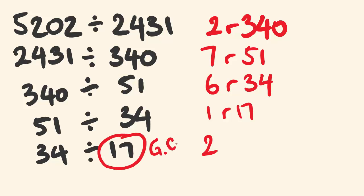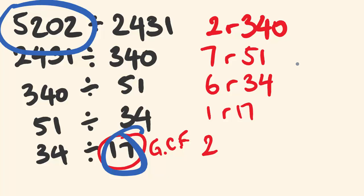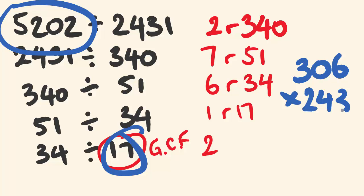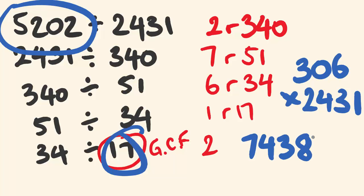Our GCF is 17. So 5202 divided by 17 gives 306, then multiply by 2431. The least common multiple is 743,886. Yes, I did prepare that one earlier — but I wanted to show you how this method works even with very large numbers.